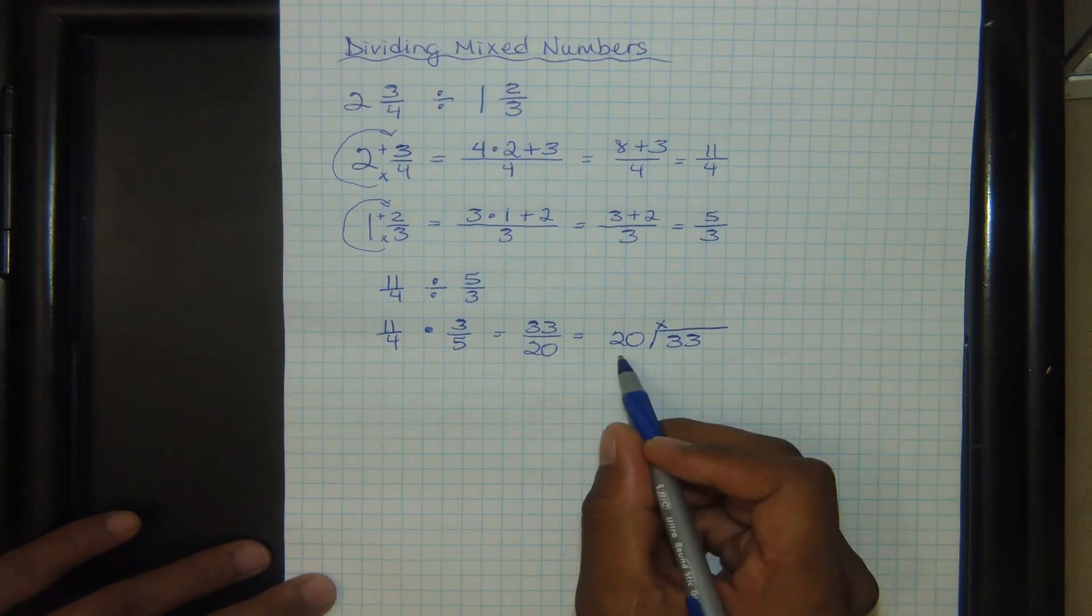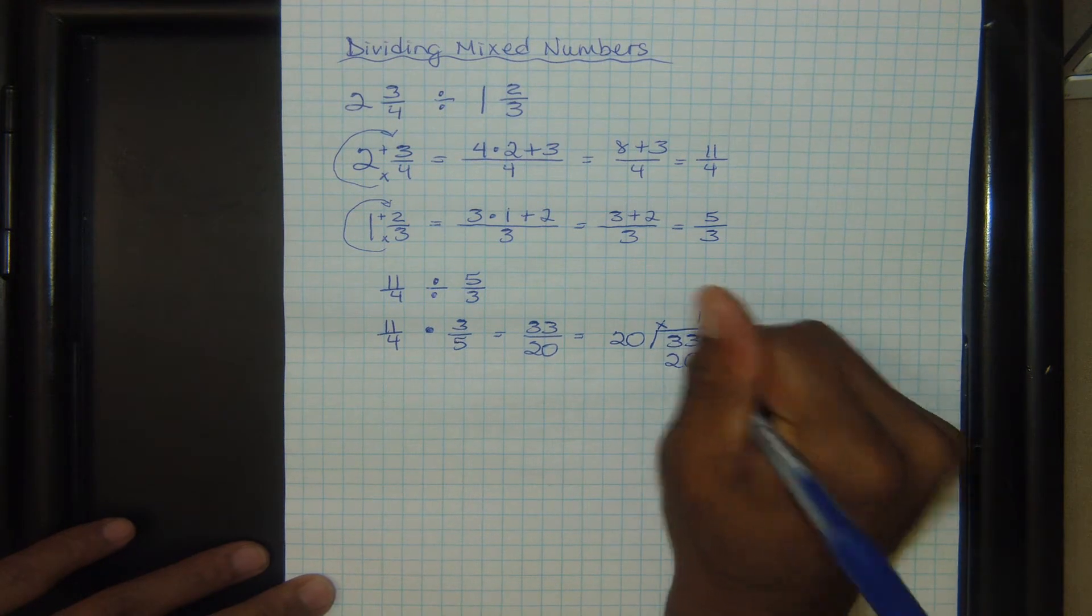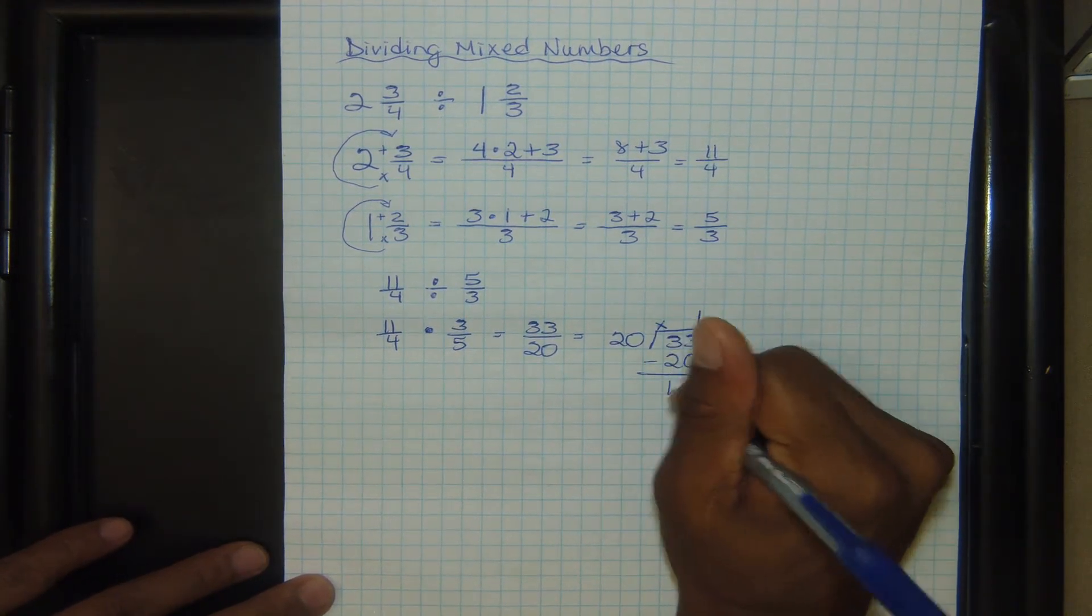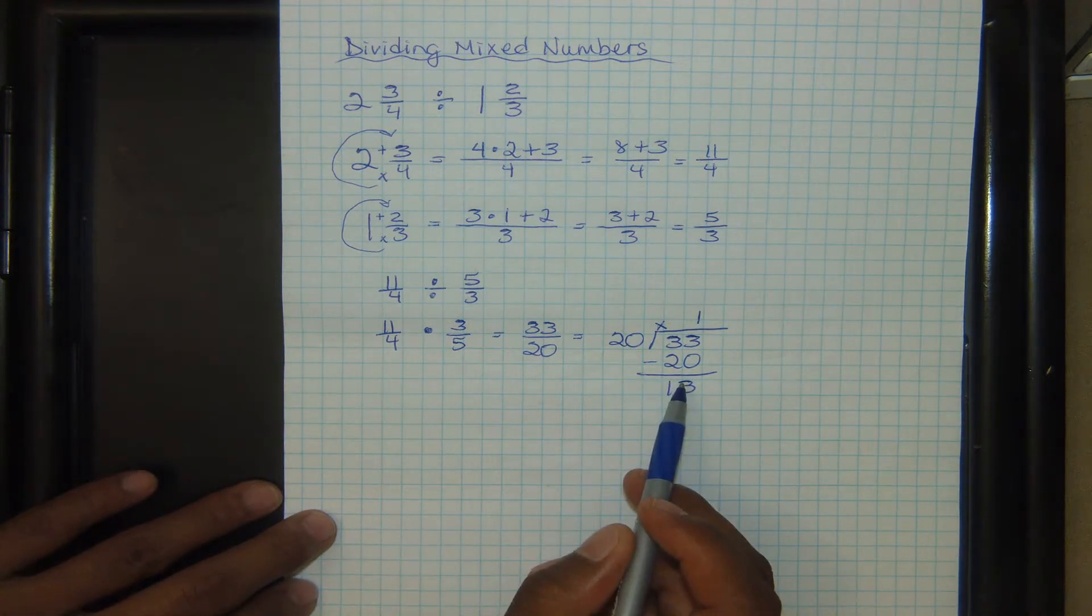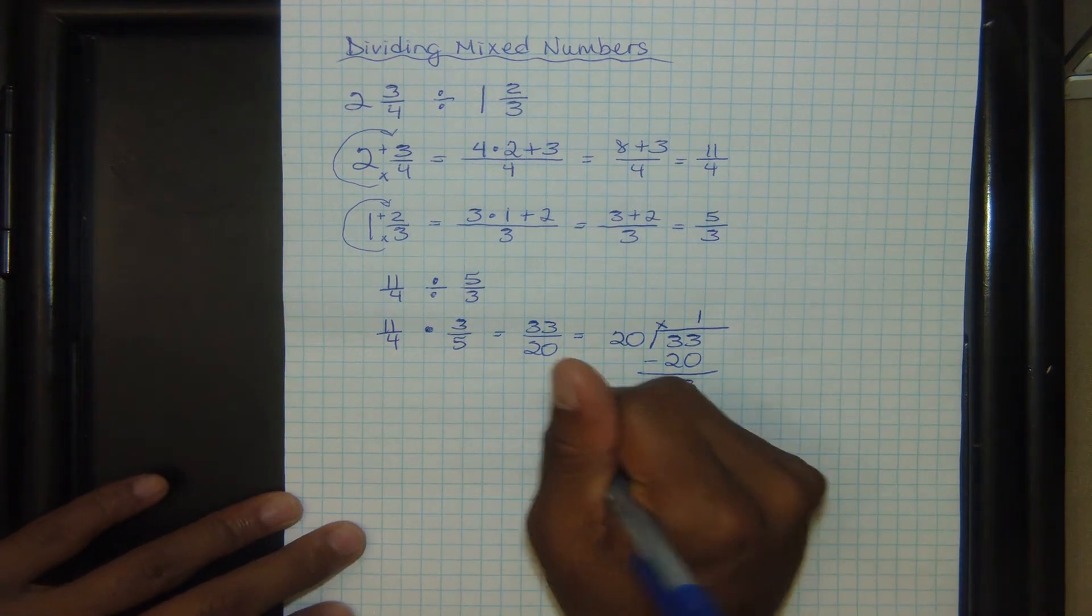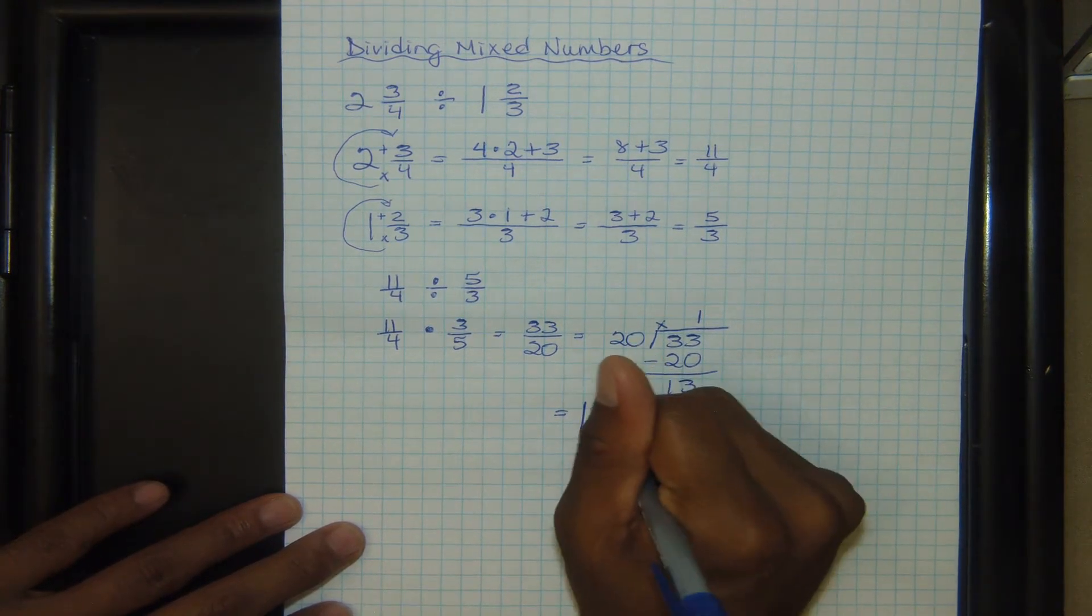We want to figure out how many times twenty goes into thirty-three. That goes into it once. One times twenty is twenty. We subtract, that's thirteen. At this point, we can stop because we know that twenty can't go into thirteen. It's too big. So our final answer is going to be one and thirteen over twenty.